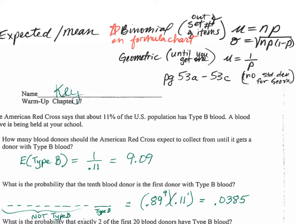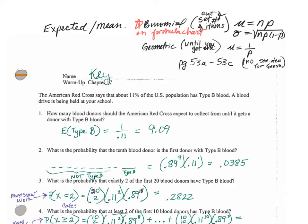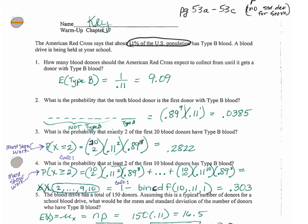So with those things said, let's go on to our problems. The first one deals with type B blood — 11% of the U.S. population has that, so that's what we expect in all communities. How many do I expect to go until they get a type B blood person? That's going to be the geometric 1 over P, which is 9.09. Do not round that to 9 because this is, on average, how many you expect to happen. On average, I expect to have to examine about 9.09 students.